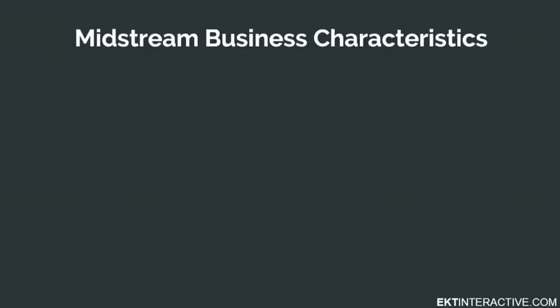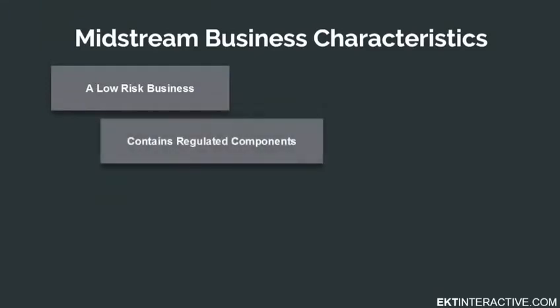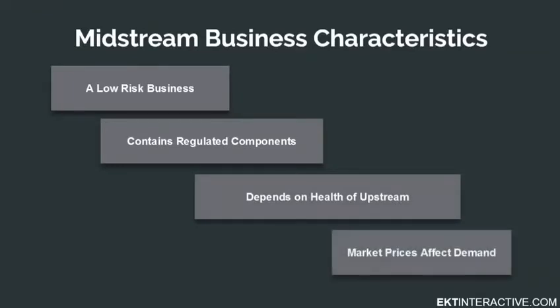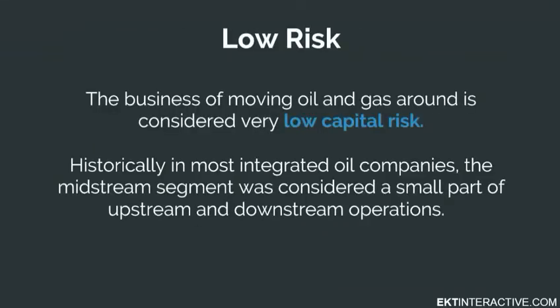The four key characteristics of the midstream segment are that it is generally low risk, it is highly regulated — especially the pipeline components — asset investments are dependent on the health of the upstream, and oil and gas prices affect demand. The business of moving oil and gas around is considered very low capital risk. Historically, in most integrated oil companies, the midstream segment was considered a small part of upstream and downstream operations. It wasn't until the 1980s that U.S. companies began spinning off these assets into publicly traded Master Limited Partnerships, or MLPs.